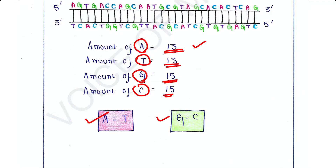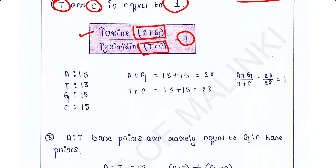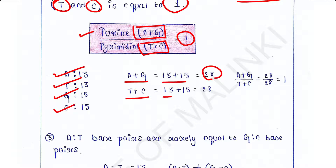Using the values from our figure — 13 adenine, 13 thymine, 15 guanine, and 15 cytosine residues — A plus G equals 13 plus 15, which is 28. T plus C is also equal to 28. So (A + G) divided by (T + C) equals 28/28, which equals 1. This is the second rule.